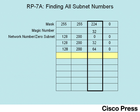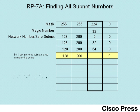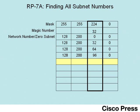Repeating step five again, we copy the three boring octets down to the next line at step five A. At step five B, we add the magic number of 32 to 64, which gives us 96 for the new subnet number. So this next subnet number is 128.200.96.0. At this point you should start to see the pattern — in the third octet, all the subnet numbers are some increment of 32, which is the magic number.